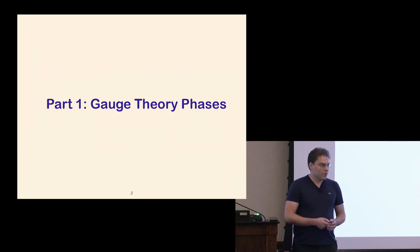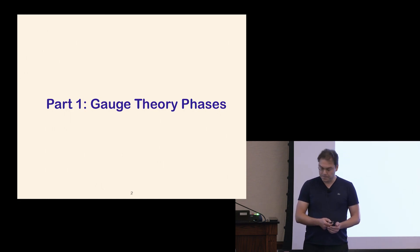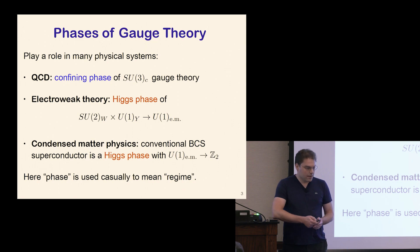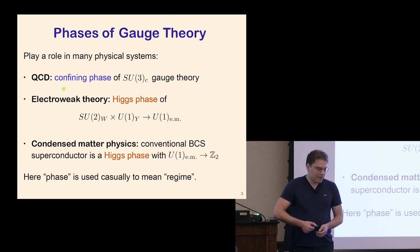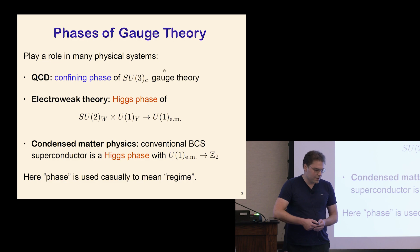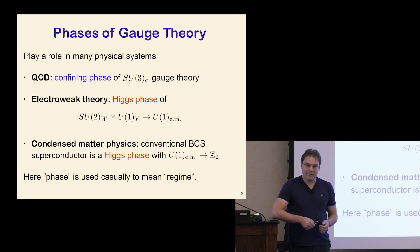The first part will be a broad-brush review of gauge theory phases, with some connections to what Zohar just explained. Phases of gauge theory play a role in many parts of physics, not just the standard model. In a loose sense that I'll make more precise, QCD is in a confining phase of an SU(3) gauge theory, and the SU(2)×U(1) part of the gauge group is Higgs or spontaneously broken to electromagnetism — those are the two most prominent gauge theory phases.